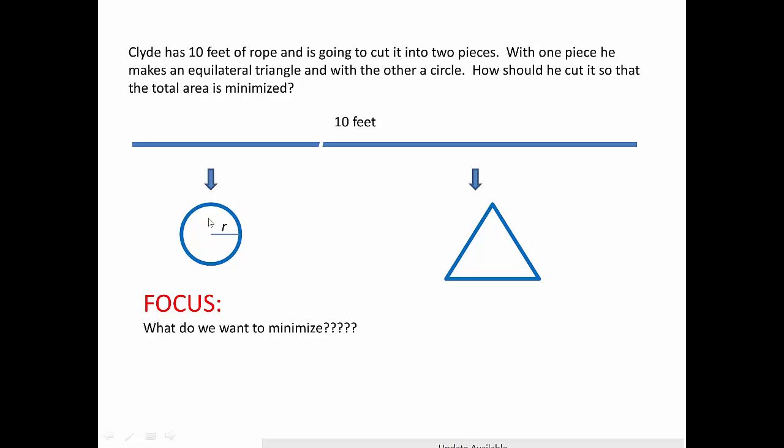In order to figure out the total area, I'm going to put a radius in my circle and label my triangle with a height and a base because that's how I figure out the formulas. The area of a circle is πr², the area of the triangle is ½bh, but sadly this has three variables: r, b, and h. We need to have one variable, so we're off to do a constraint.